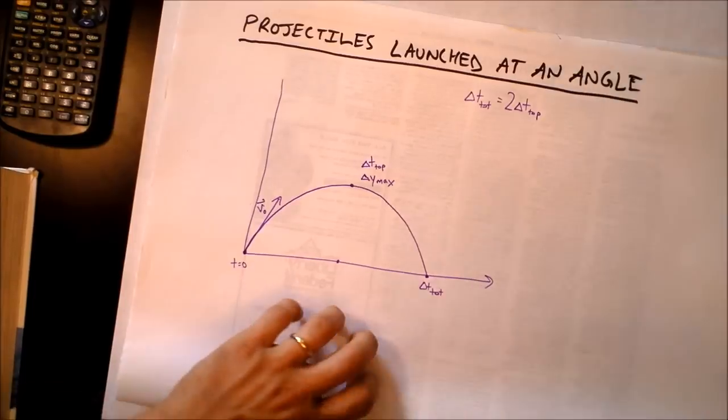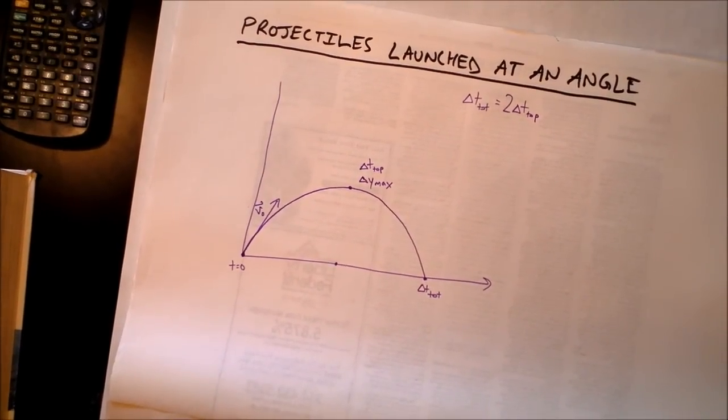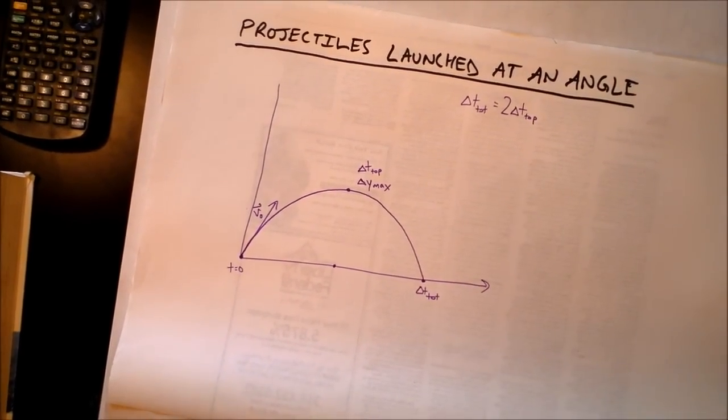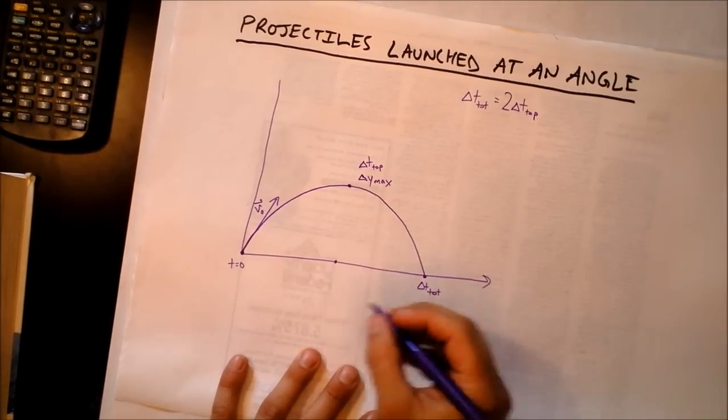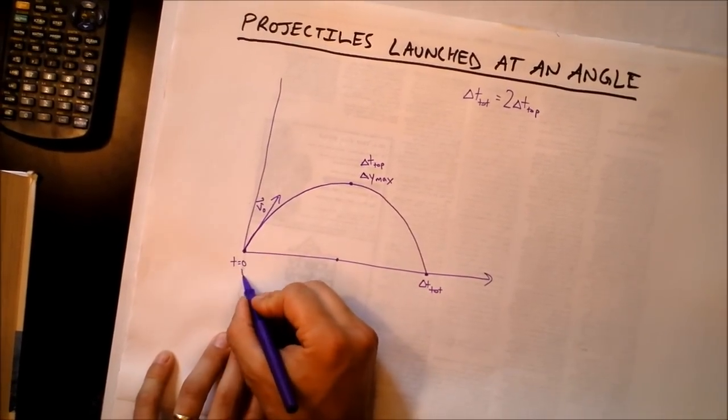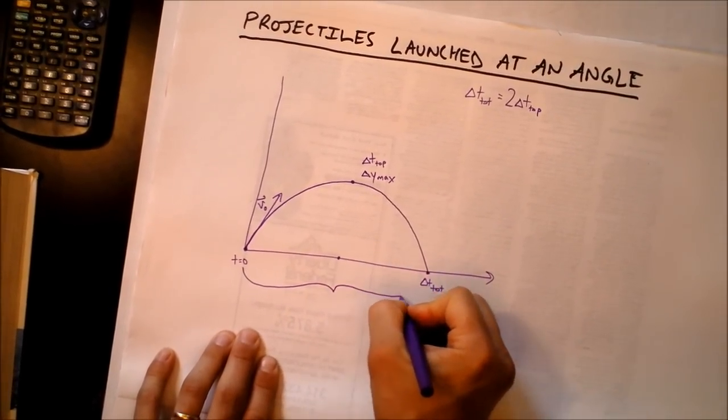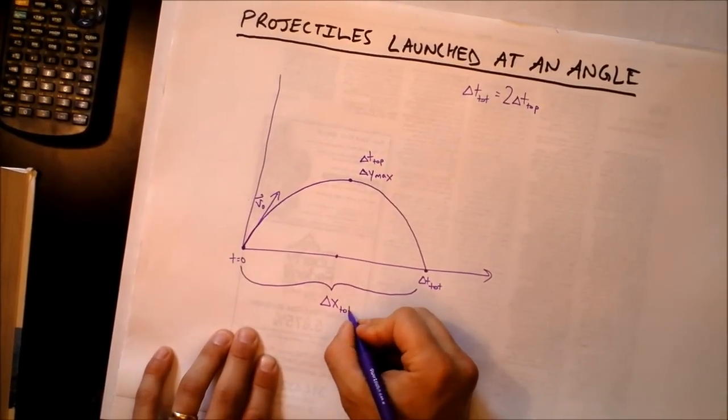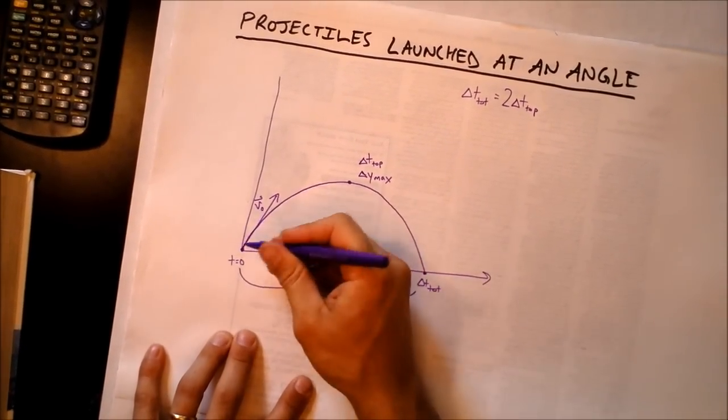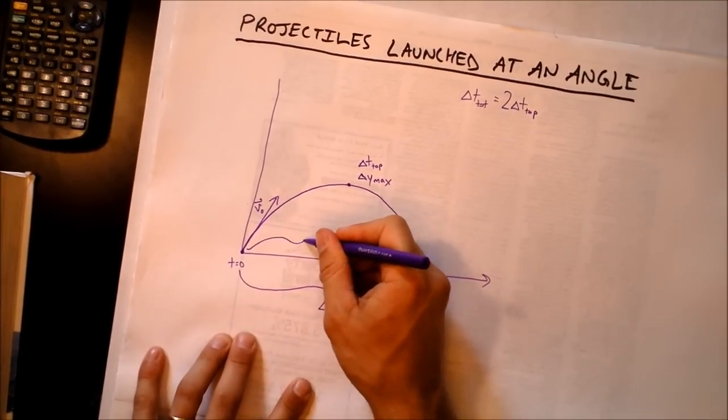Then I want to write down over to the side that delta t total is two times as long as delta t top. I hope that's reasonable for you. Our next plan is to call this distance right here delta x total.